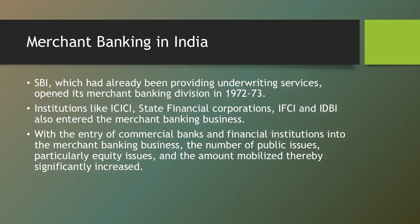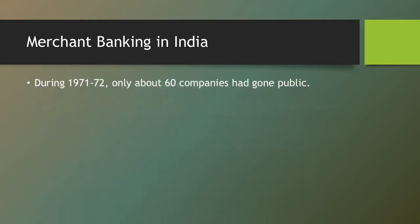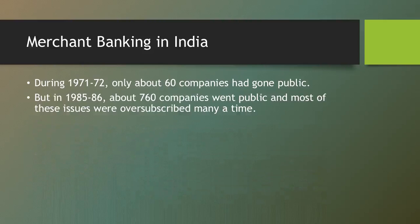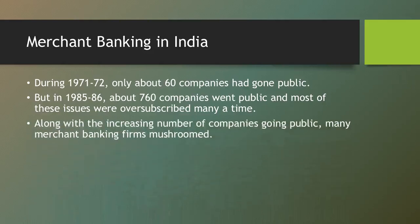With the entry of commercial banks and financial institutions into the merchant banking business, the number of public issues — particularly equity issues — and the amount mobilized significantly increased, and many merchant banking firms mushroomed during that period. During 1971–72 there were only about 60 companies that had gone public, but between 1985 and 1980 about 760 companies went public and most of these issues were oversubscribed. Private firms including DSP Financial Consultants, 20th Century Finance Corporation, and Credit Capital Finance Corporation also entered the merchant banking business.